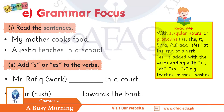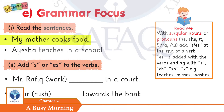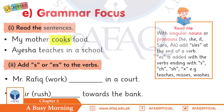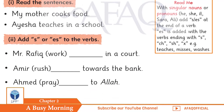Now, when do we add S and when do we add ES? Let's see in the example: 'My mother cooks food.' Here, 'mother' is a singular noun, and since the verb 'cook' does not end in CH, SH, or X, only S is added. So the rule is: add S unless the verb ends in CH, SH, or X, in which case add ES.